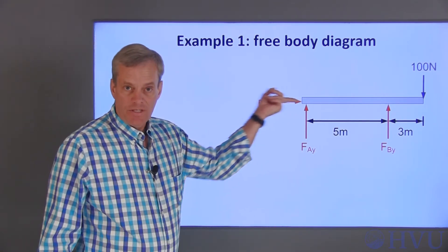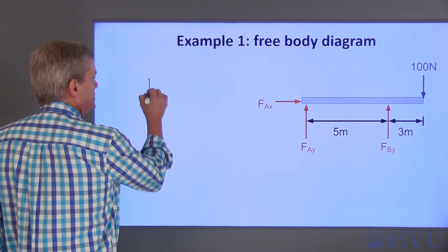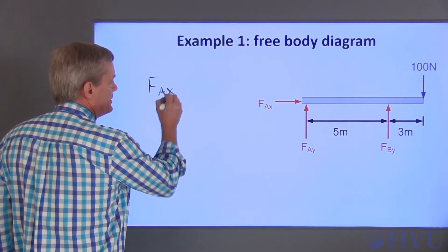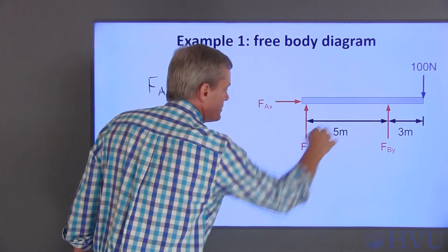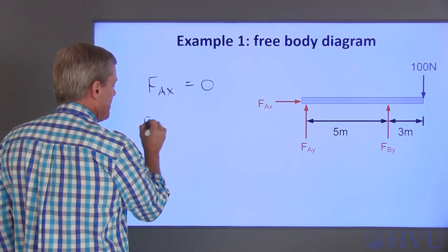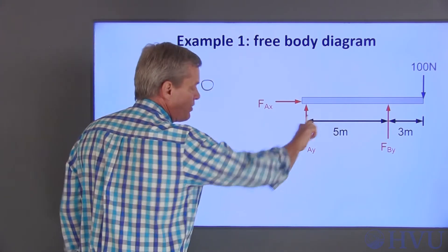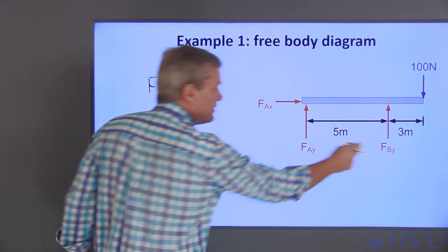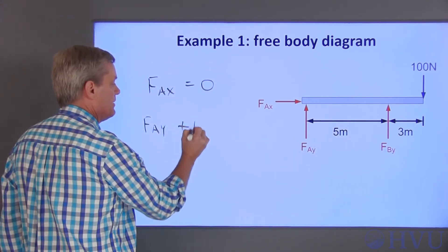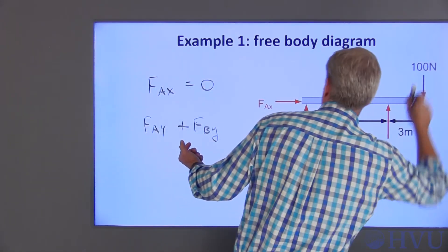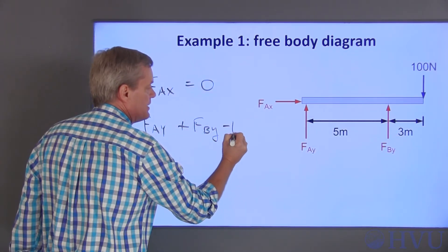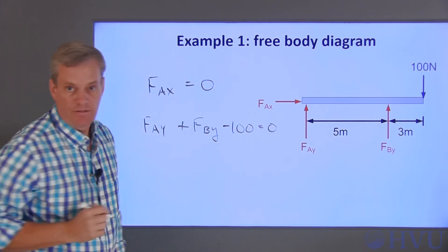So if I sum forces in the X or horizontal direction, the only force in that direction is FAX, so it sums to zero. Sum of the forces in the vertical direction is FAY. I'm going to treat upward forces as being positive, so plus FBY. The 100 Newton force is down, so that gets a negative 100, those also sum to zero.